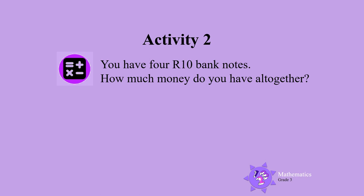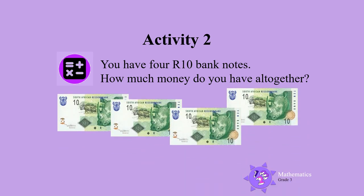Activity 2. Let's solve this money problem together. You have four 10 rand banknotes. How much money do you have altogether? You can write a multiplication number sentence like this: 4 times 10. This means that you have 4 lots of 10. And 4 times 10 is 40 rand. So you have 40 rand altogether.